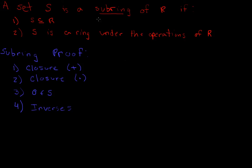I have here the definition of a subring and the steps to show a subring proof, and I took these directly from the last video. In this video I'm going to do an example. Something I kind of forgot to mention: technically, in order to show that one ring is a subring of another, you would need to show that it's a subset of that ring.